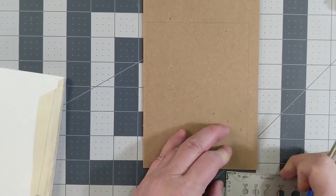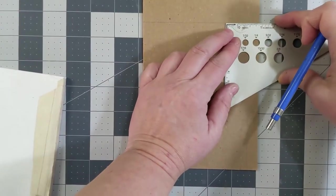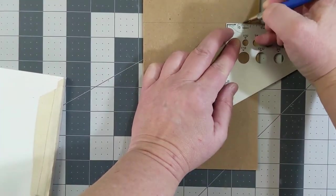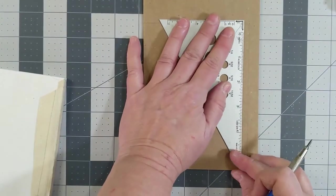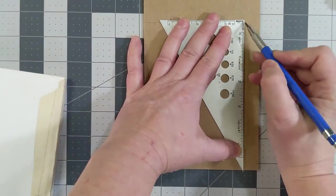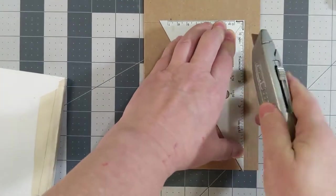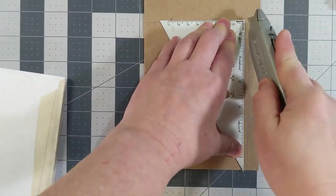From there I'll take a ruler and pencil and measure in one-fourth of an inch on the width and then mark that line. And then you can cut it with a box cutter.